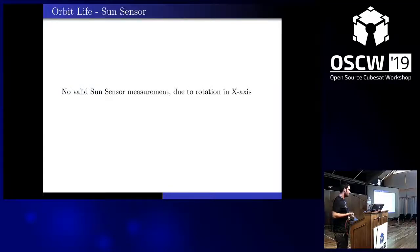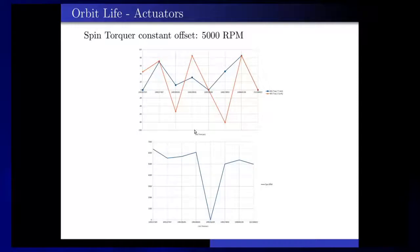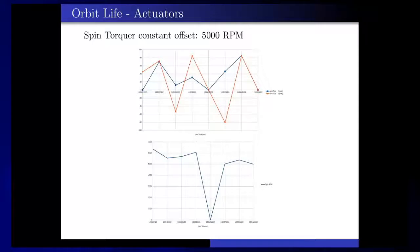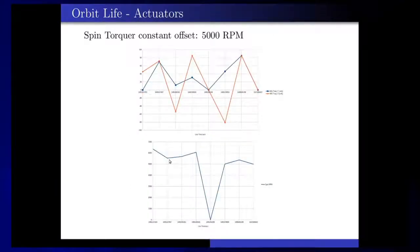We didn't have any sun sensor measurement to analyze whether it works. Looking at the actuators: we can see the fluctuation of the spin-torquer which shows the continuous rotation of the X-axis. The first measurement is near the launch day. Also, from the gyroscope we can see that the Y-axis, which is the red line, is very stable due to spin-torquer rotation which is near 500 after the middle of the mission.